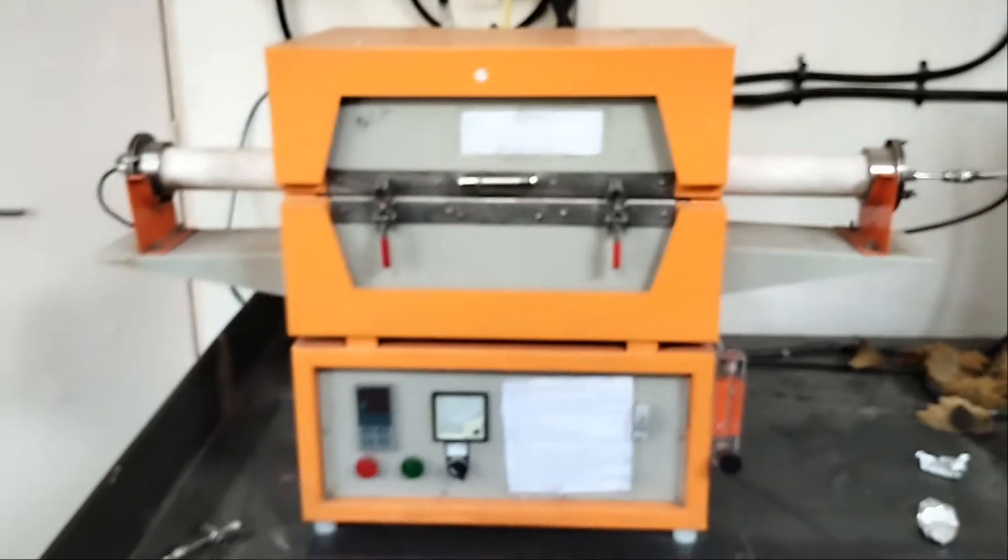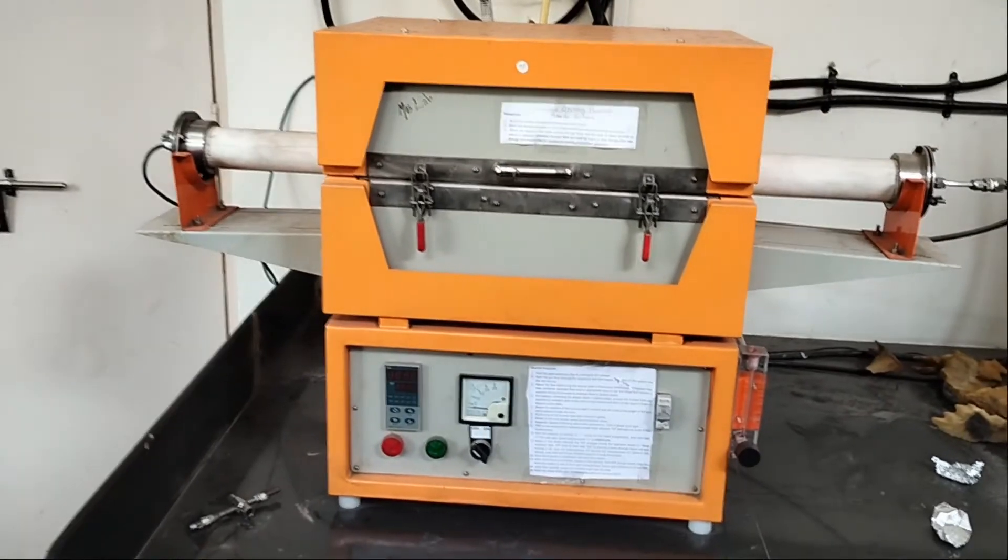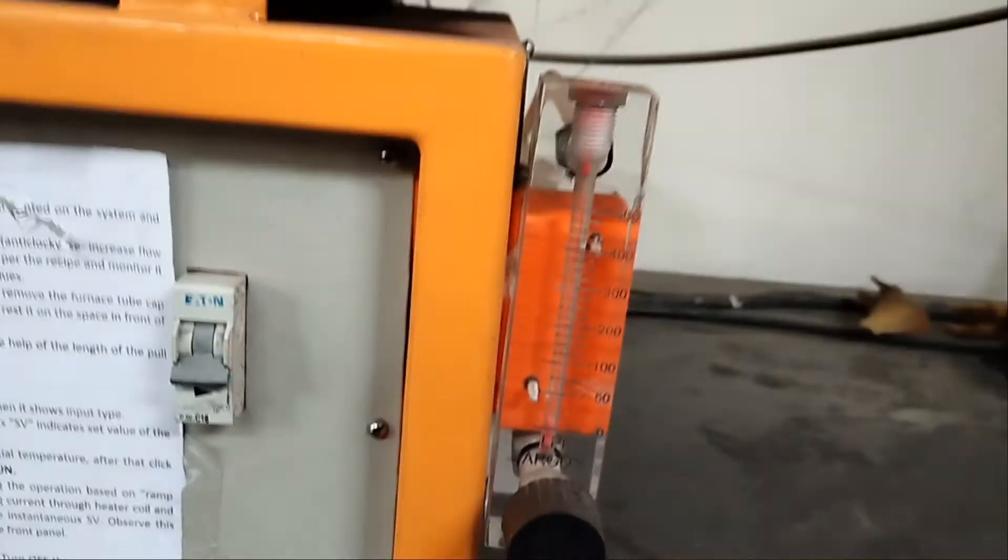So this is how the tube furnace looks after insertion. This is the flow meter for the inert gas, and the backside will be the flow meter for the hydrogen gas.